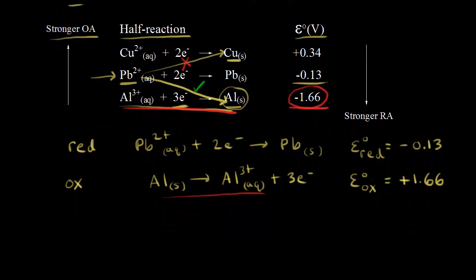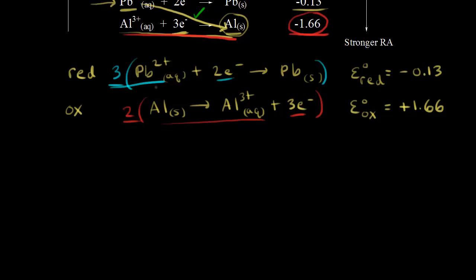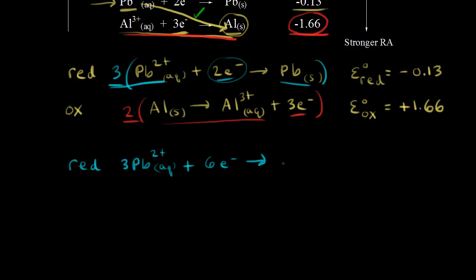To write the overall reaction, we need to balance the electrons. We multiply the first half-reaction by 3, giving us 6 electrons (3 × 2 = 6), and multiply the second half-reaction by 2, giving us 6 electrons (2 × 3 = 6). So the reduction half-reaction becomes: 3Pb²⁺ + 6e⁻ → 3Pb(s). Remember, we do not multiply the standard reduction potential by 3, because voltage is an intensive property — it stays at −0.13 volts.